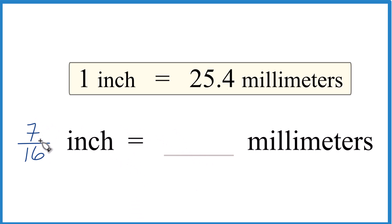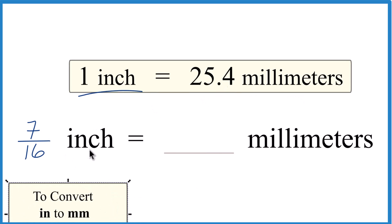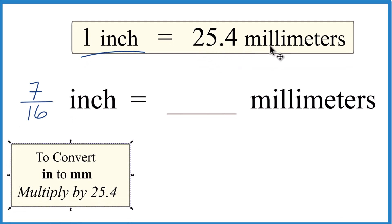But if we want to convert 7/16 of an inch to millimeters, here's how we could do it. One inch is 25.4 millimeters. So we're basically just going to multiply 7/16 of an inch times 25.4 millimeters. This is our conversion factor. That'll give us millimeters. So let's do that.